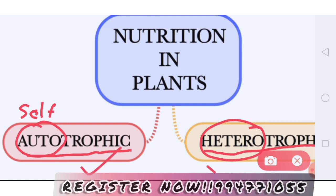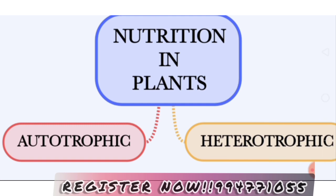So plant nutrition is of two types: one is autotrophic and one is heterotrophic. Make sure you know the spelling of heterotrophic.